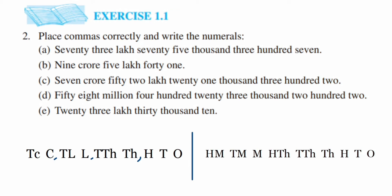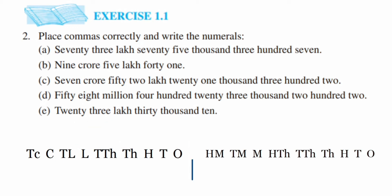Let's solve Problem A. I'll place the commas: comma here, comma here, comma here. We have seventy-three lakh, so no crore needed. Then seventy-five thousand, using ten-thousands and thousands place values. Then three hundred and seven, which is 3-0-7. With commas placed, the answer is 73,75,307.